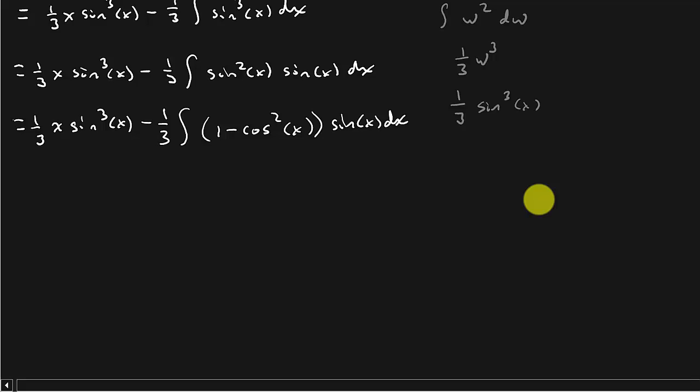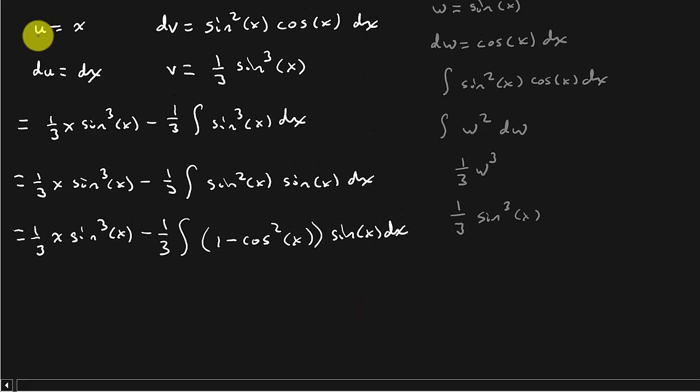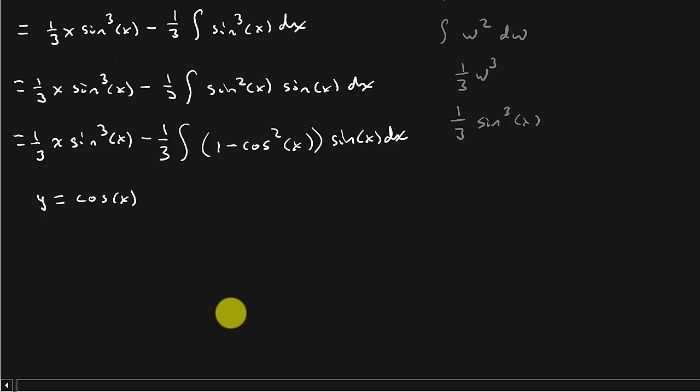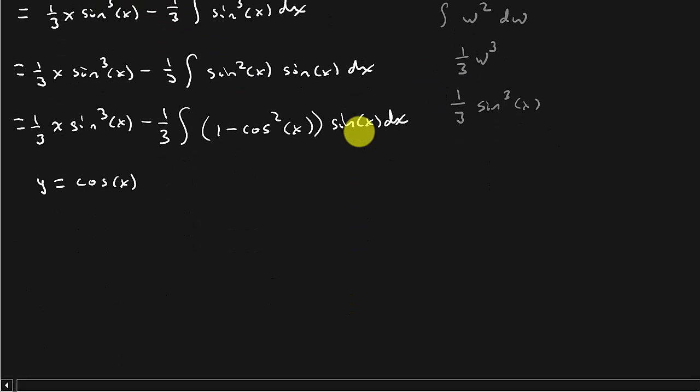Alright. And so now I can do another u substitution. Well, I guess since I used u up here and I used w over here, I'm just going to use y. So y is equal to cosine x. So I'm doing a u substitution. I'm just not using u because I used a u here and I used a w here. So just pick a different letter. It's the same thing as u substitution.